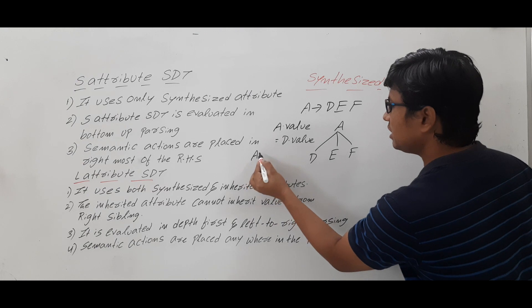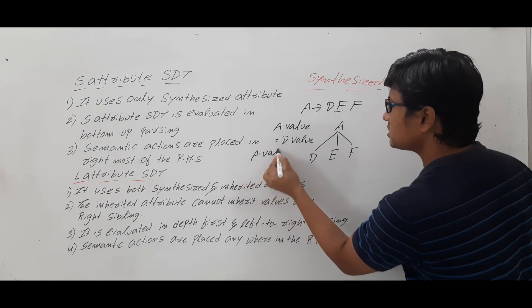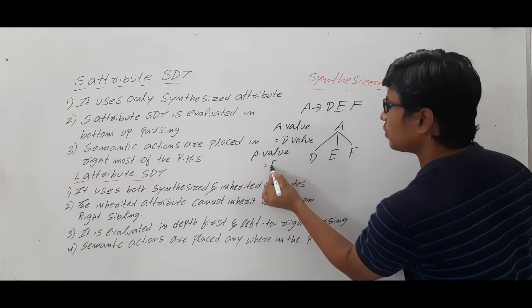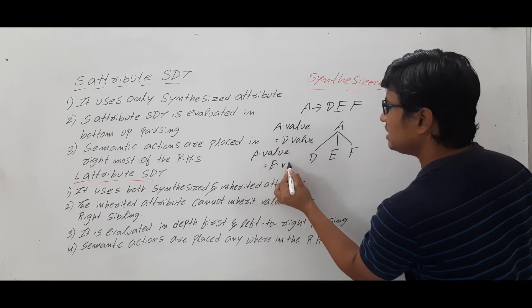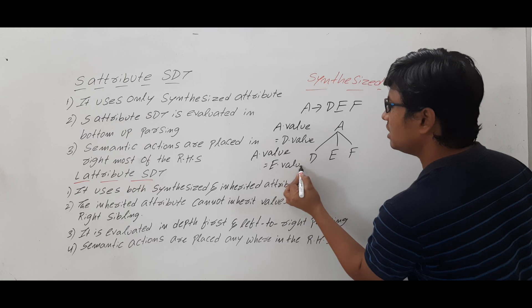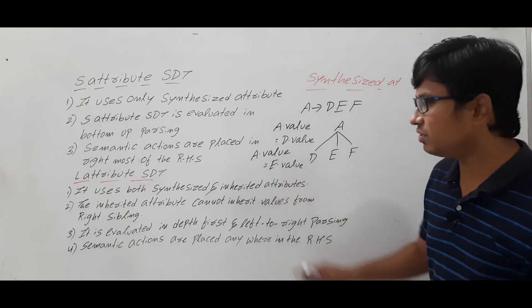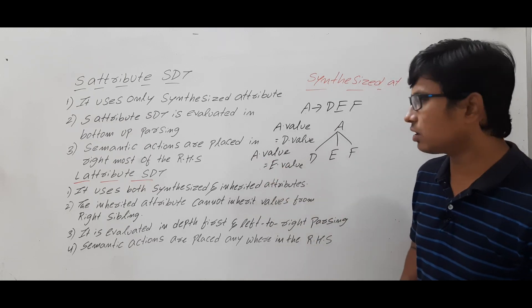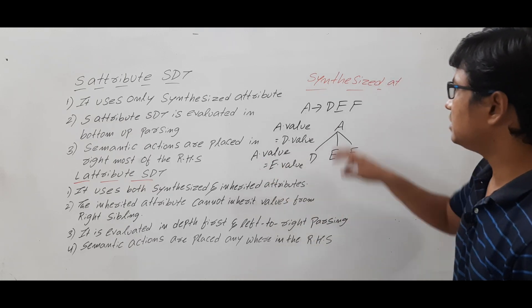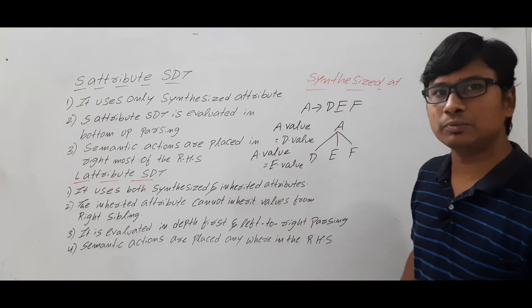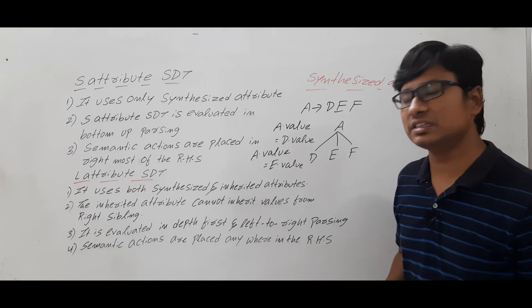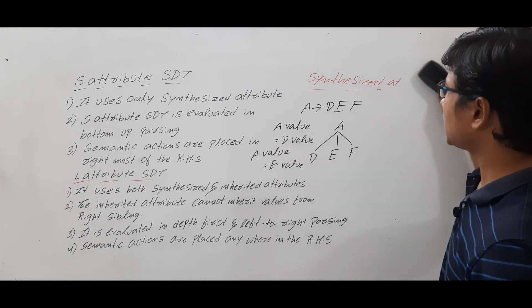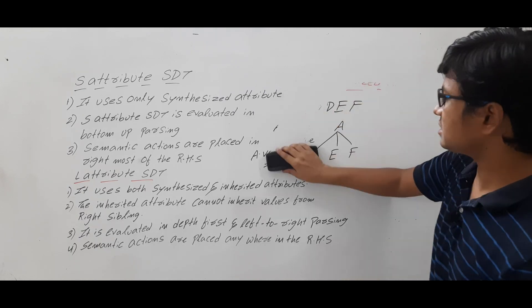Another example: A.value = E.value, where E is the child of A. These kinds of attributes we call synthesized attributes.